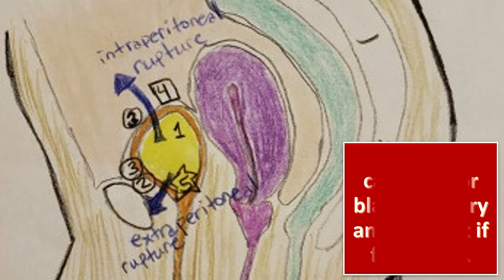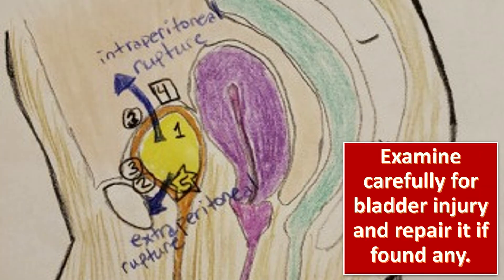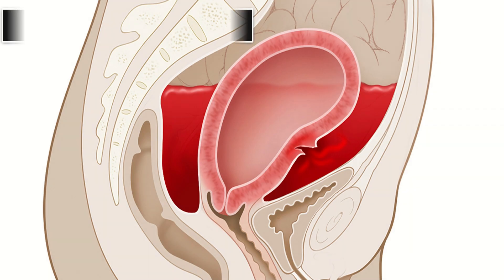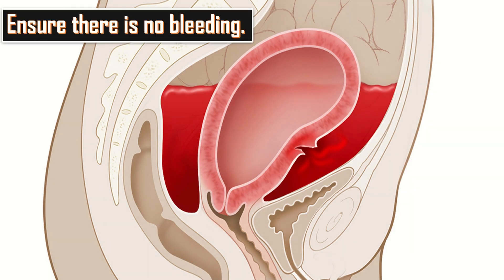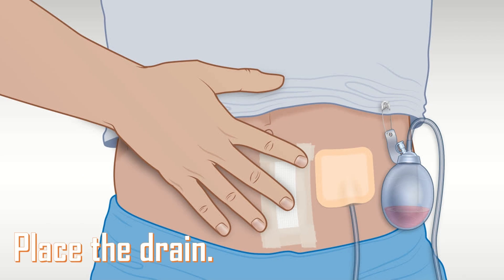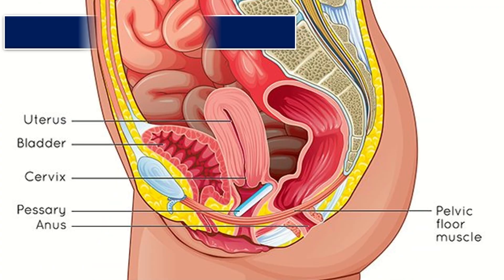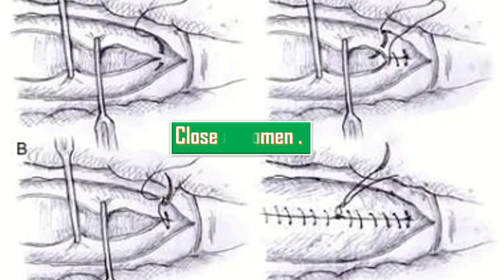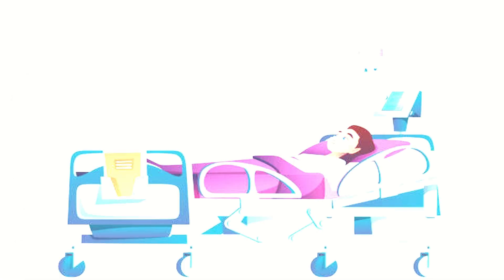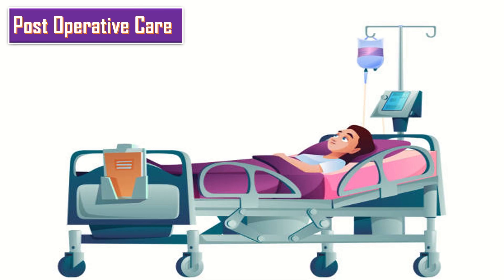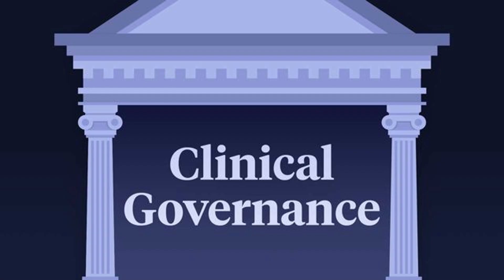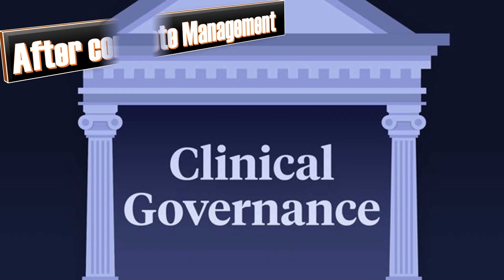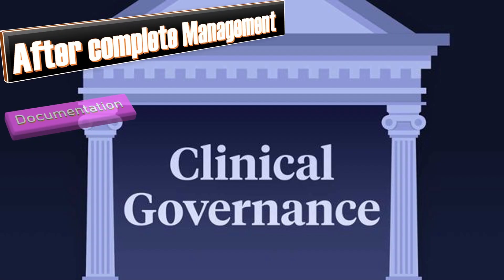Examine carefully for bladder injury and repair if found. Ensure there is no bleeding. Place a drain, return the uterus abdominally, and close the abdomen in layers. Provide appropriate post-operative care to the patient and monitor vitals. Ensure complete documentation after management.